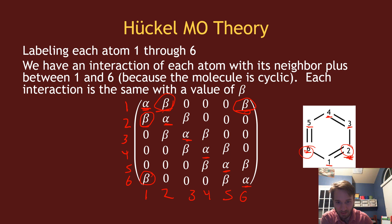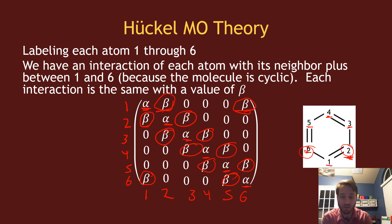The rest of the first row are zero because the other atoms are not nearest neighbors of atom one. Similarly, atom two only interacts with atom one and atom three, so I fill in the two-three position with beta. Then I continue filling in three-four, four-five, and five-six. That gives all the interactions between my atoms; the rest are zero. This is the matrix that needs to be solved to find the orbital energies according to Huckel MO theory.